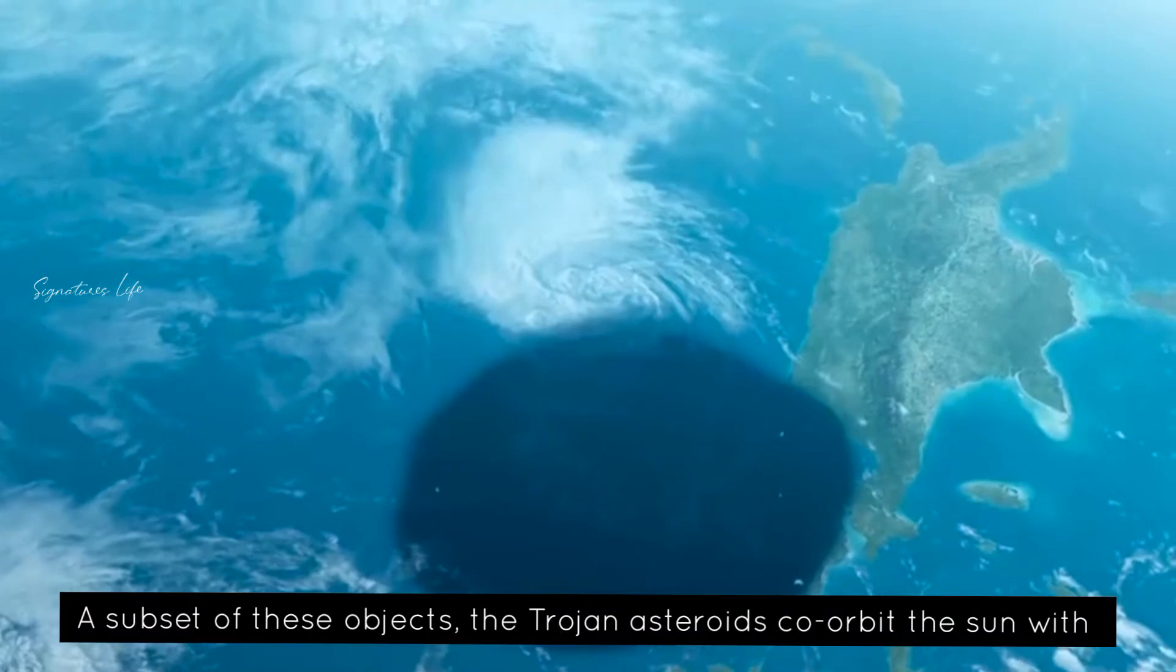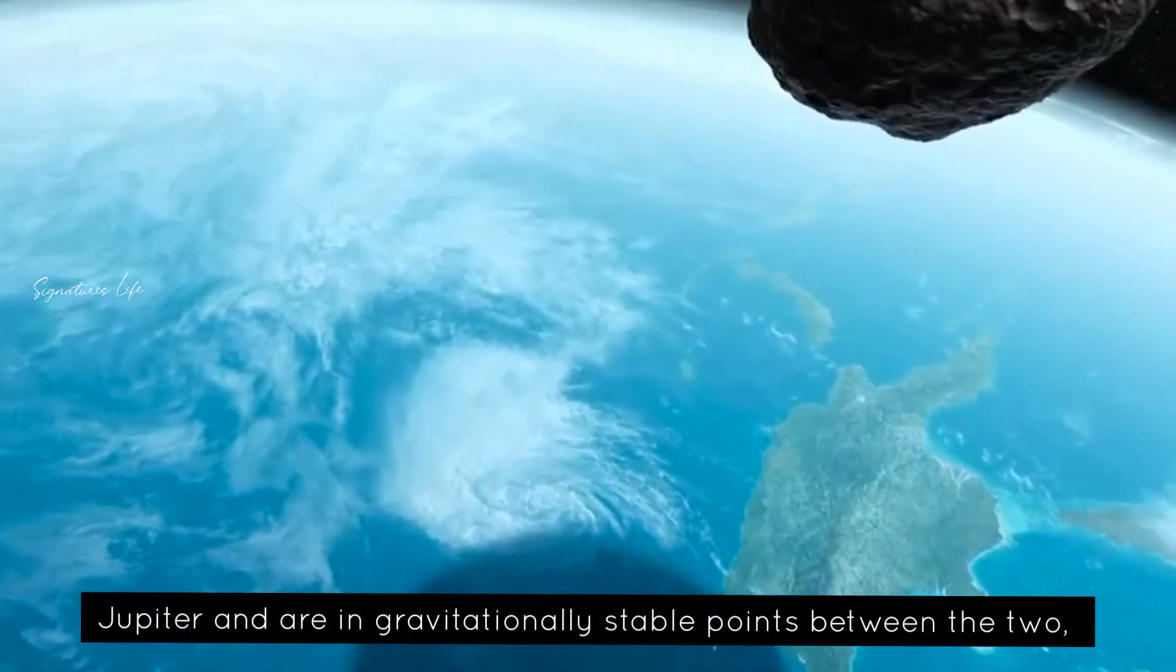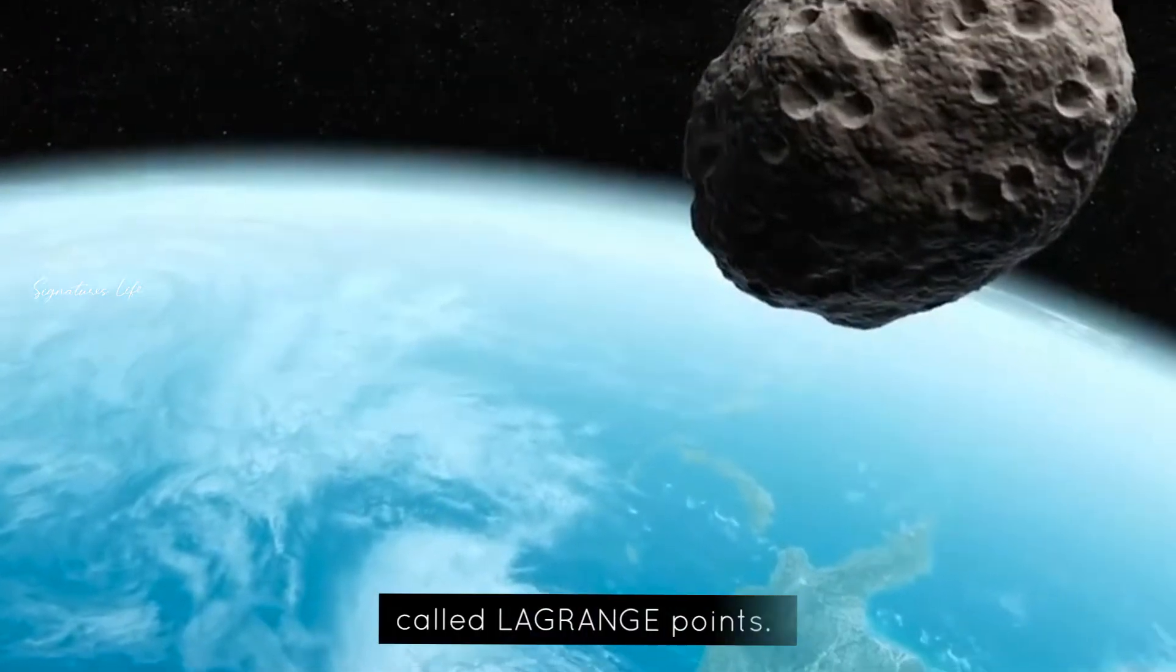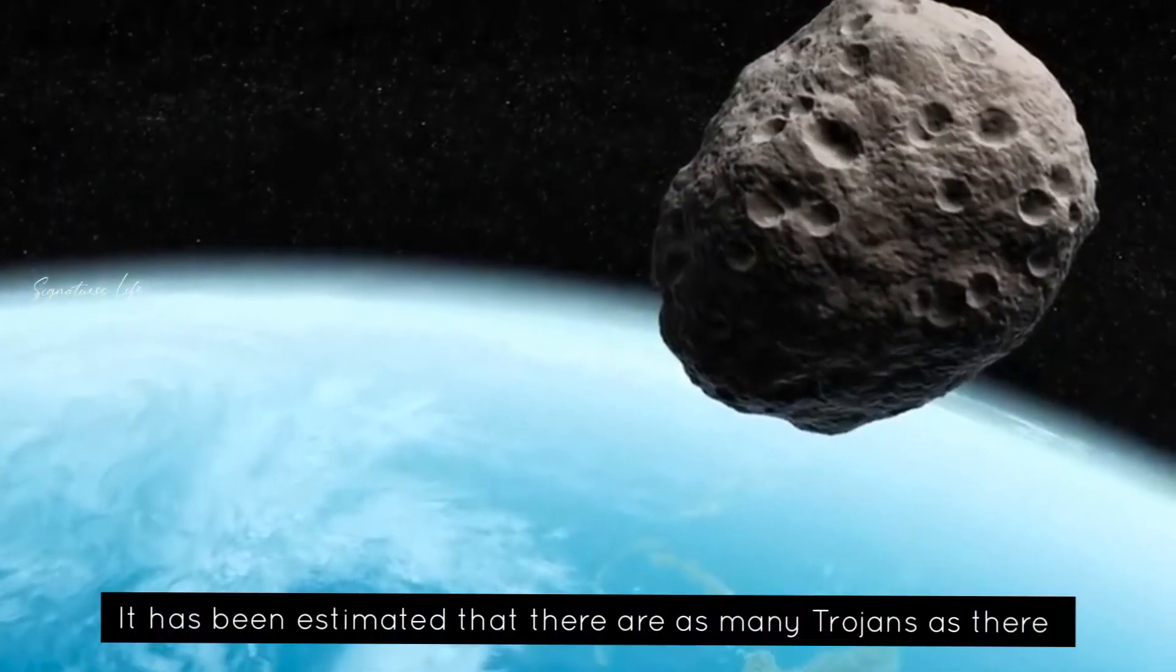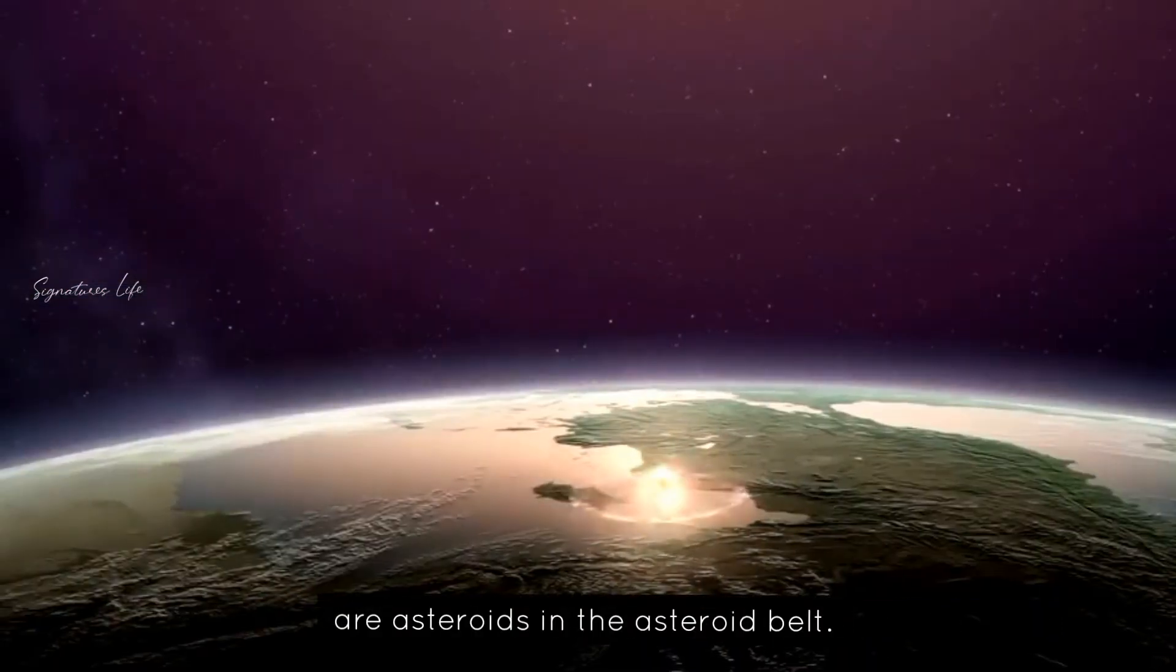A subset of these objects, the Trojan asteroids, co-orbit the Sun with Jupiter and are in gravitationally stable points between the two, or Lagrange points. It has been estimated that there are as many Trojans as there are asteroids in the asteroid belt.